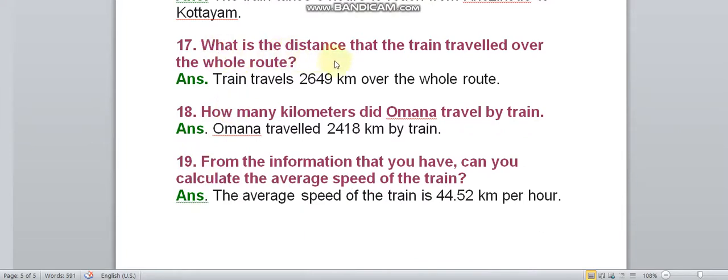What is the distance that the train travelled over the whole route? The train travelled 2649 km over the whole route.